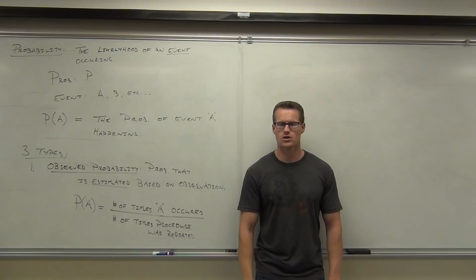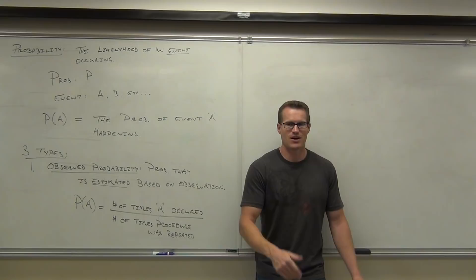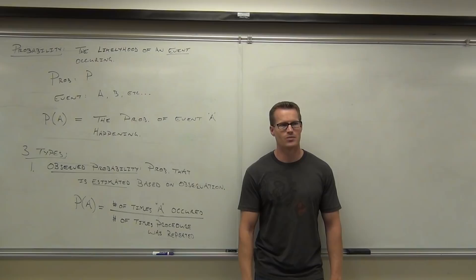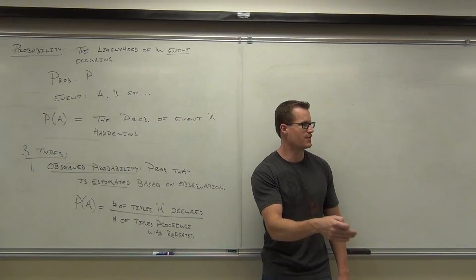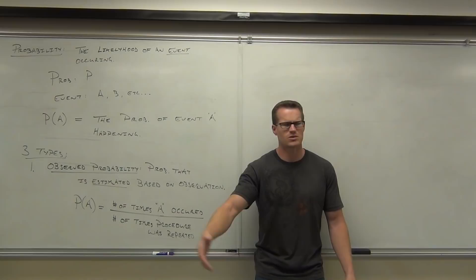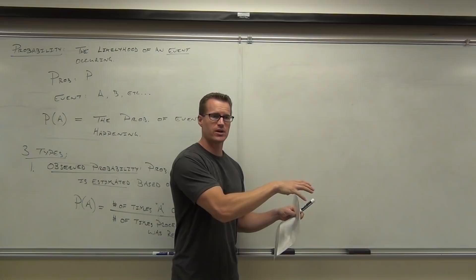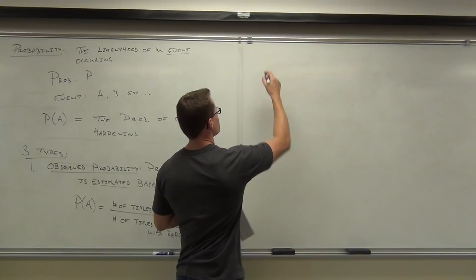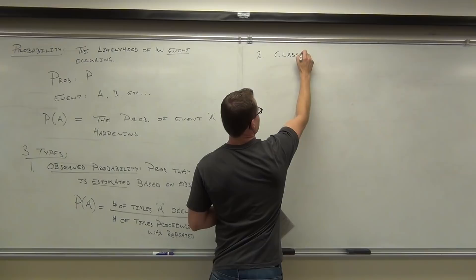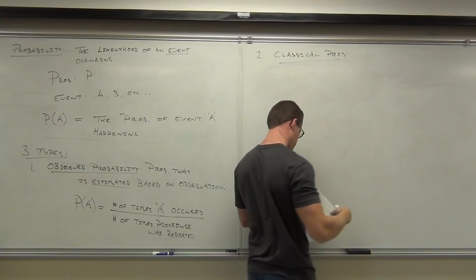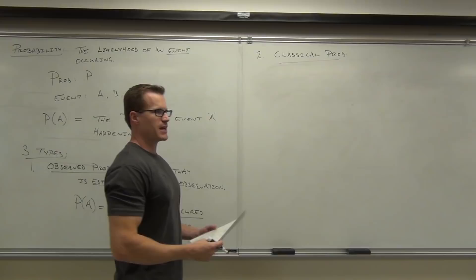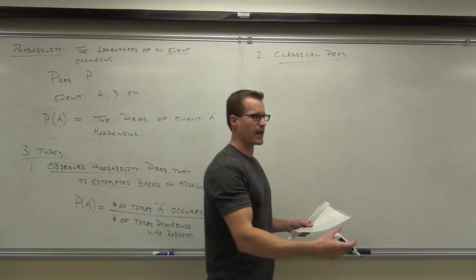Notice the difference between observed — where you actually calculated how many times you hit the ball divided by how many times you were up — versus classical. Classical is a theory. Observed probability is the actuality. Classical is what should happen; observed is what did happen. Classical is based on the idea that every simple event has an equal chance of occurring.